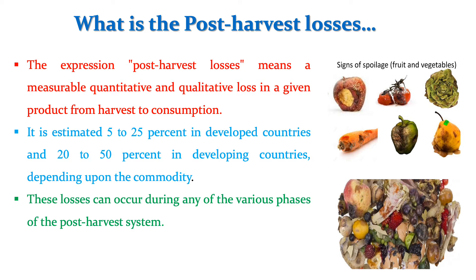As we see the losses in agriculture production, it is estimated that 5 to 25% losses occur in developed countries, whereas 20 to 50% in developing countries, depending upon the commodities. For example, in case of grains, India accounts for 5 to 15% losses, whereas in case of fruits and vegetables, it accounts for 30 to 50% losses after harvesting. Post-harvest losses are expressed as measurable quantitative as well as qualitative losses occurring in fruits, vegetables, and grains after harvesting up to the final consumption by the end user or consumer.